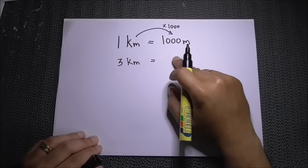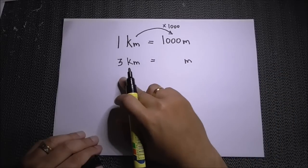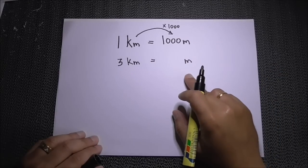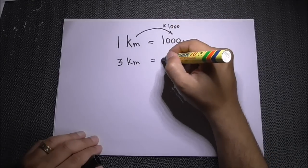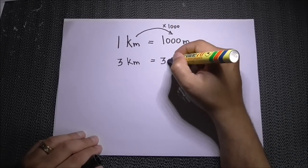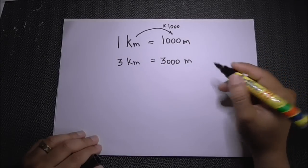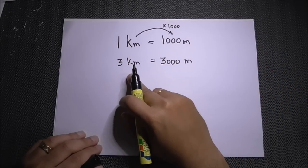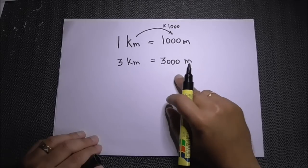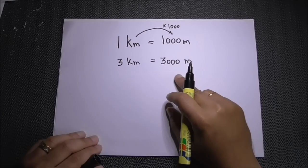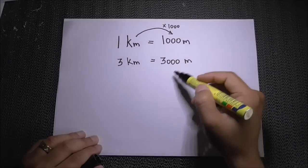So three kilometers converted to meters: we multiply by one thousand. Three times one thousand equals three thousand meters. In order to convert kilometers to meters, you multiply by one thousand.